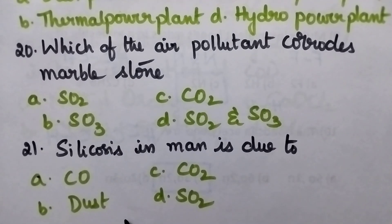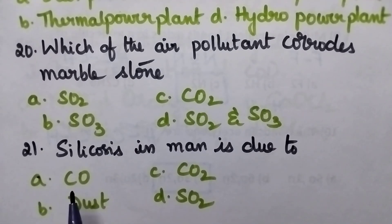Silicosis in man is due to A: Carbon monoxide, B: Dust, C: Carbon dioxide, D: Sulphur dioxide.